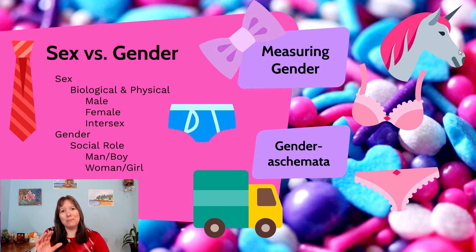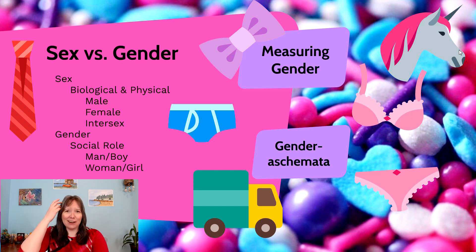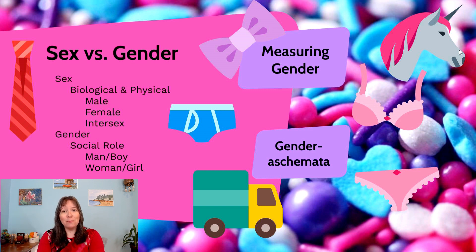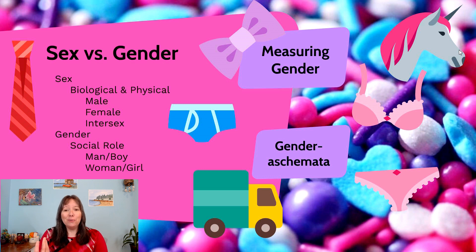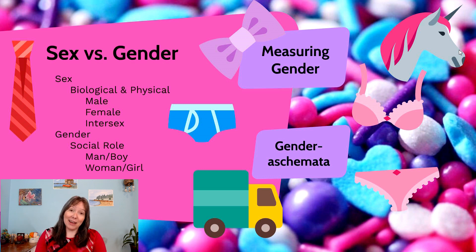If gender is all about your social roles, that's really about your mind rather than your body. In your mind, are you a boy or a girl, a man or a woman? That should make enough sense — but that's where it gets even more complicated.